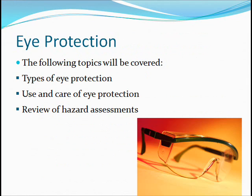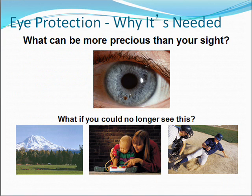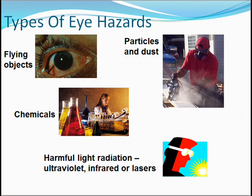Eye protection. The following topics will be covered: types of eye protection, use and care of eye protection, and a review of hazard assessments. Eye protection — why it's needed. What can be more precious than your sight? Types of eye hazards include flying objects, particles and dust, chemicals, and harmful light radiation such as ultraviolet, infrared, or lasers.